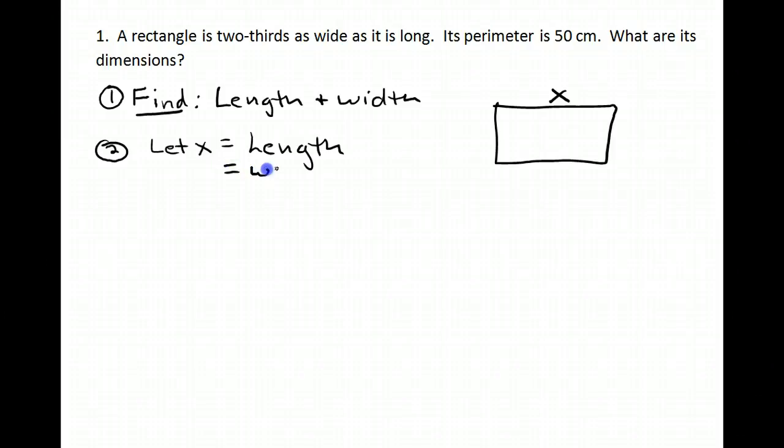So that means I need to show what the width would be. And up here it says that the rectangle is two-thirds as wide as it is long. So that tells me that the width is going to be two-thirds times the length. So over here, I can say two-thirds x is my width.